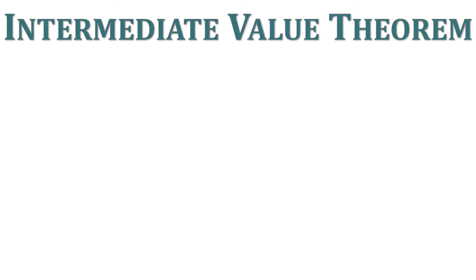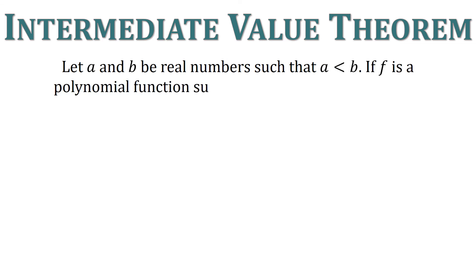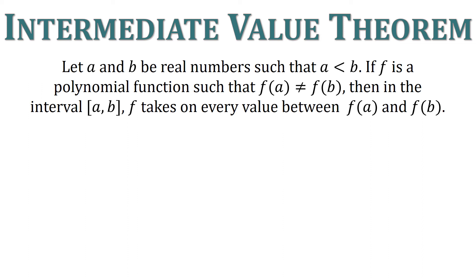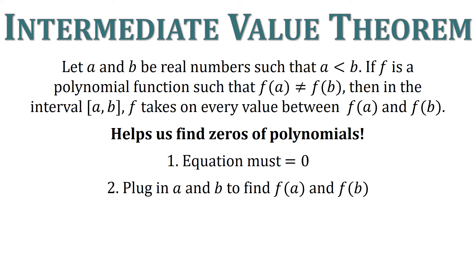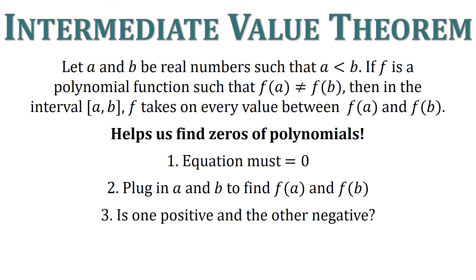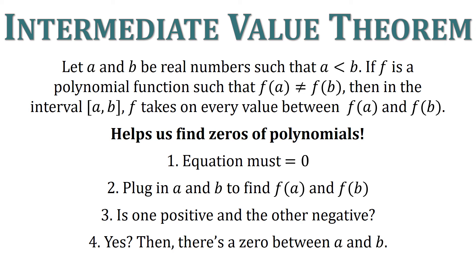Let's talk about the Intermediate Value Theorem. It says: let a and b be real numbers such that a is less than b. If f is a polynomial function such that f of a does not equal f of b, then in the interval (a, b), f takes on every value between f of a and f of b. This helps us find zeros of polynomial functions — it helps narrow down the window of where we're searching. Your equation must equal zero. Then plug in a and b to find f of a and f of b. If one is positive and the other is negative, there's a zero between a and b.